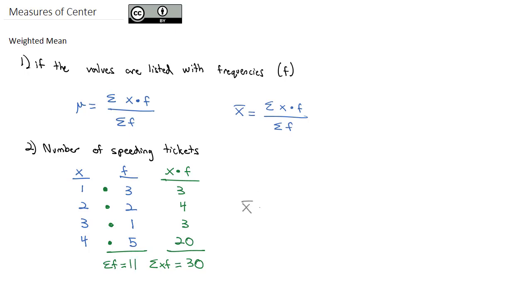So now if I want to calculate x̄, the average, I take the sum of the x times f's which was 30 and divide by the sum of the frequencies which was 11. And you'll notice that will give us the exact same answer we had before of 2.7, but it was probably a little bit easier and quicker to calculate when we had the frequencies listed.